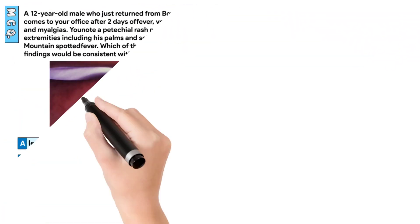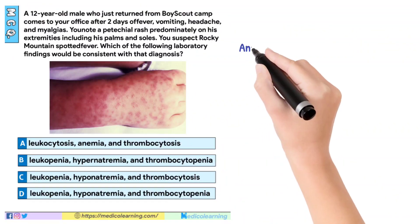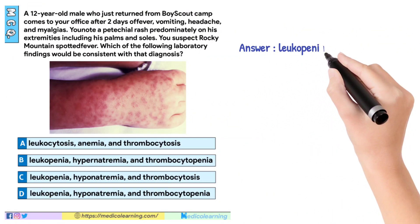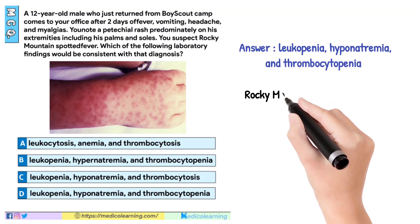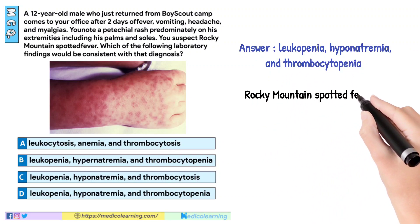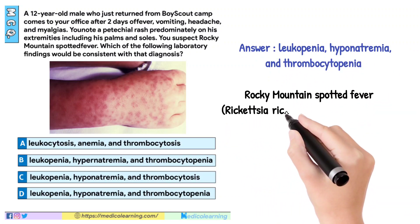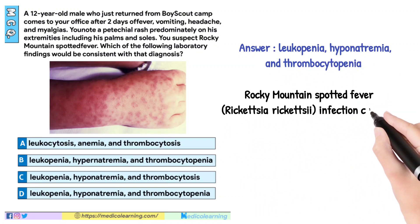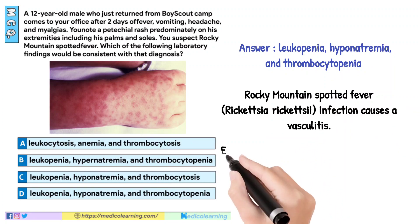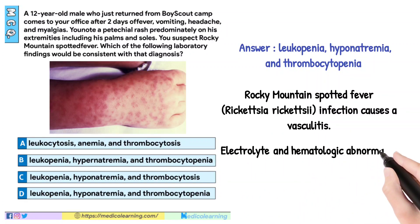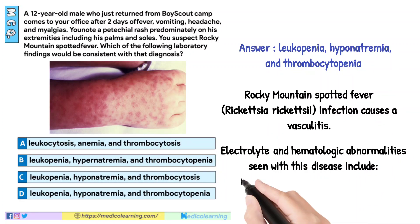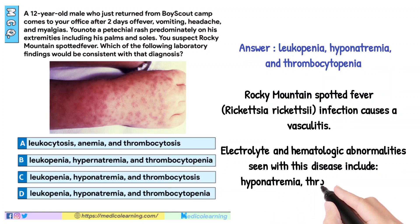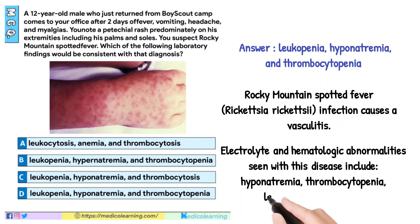In this question, the answer is Leukopenia, Hyponatremia, and Thrombocytopenia — Rocky Mountain spotted fever, Rickettsia rickettsii. Infection causes a vasculitis; electrolyte and hematologic abnormalities seen with this disease include hyponatremia, thrombocytopenia, leukopenia, and anemia.